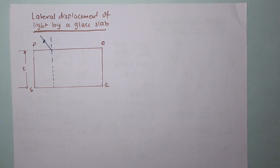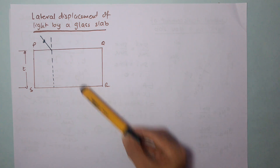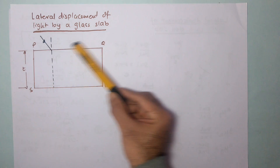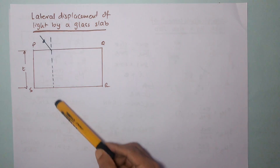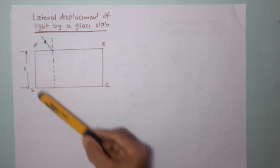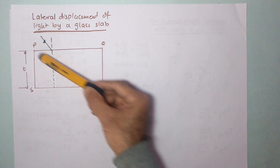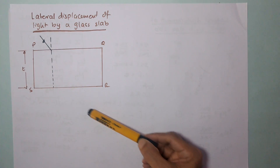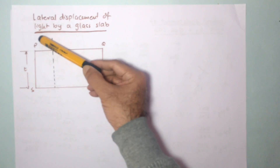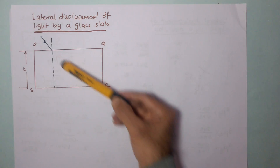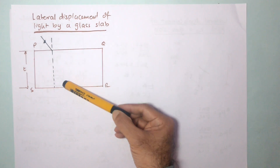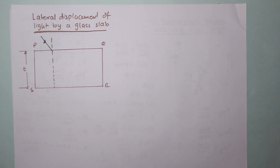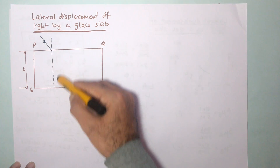After studying the concept of refraction of light and the principle of reversibility of light, we will look at what happens to a ray of light when it falls on one of the surfaces of a glass slab. We have a glass slab PQRS with thickness T. A ray of light is incident on one of the surfaces and passes through the glass slab, coming out on the other side.